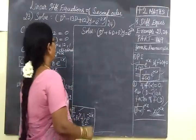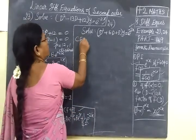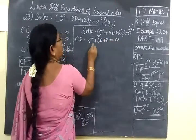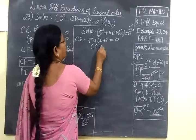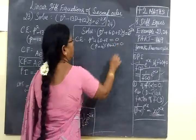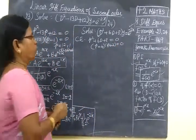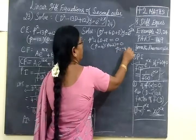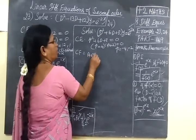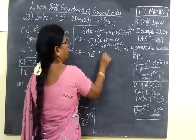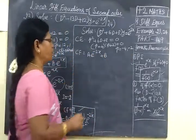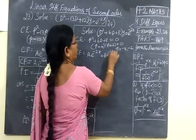Next we are finding example 24 the same way. First we find the characteristic equation. So p squared plus 6p plus 8 equal to 0, which implies p plus 4, then p plus 2 equal to 0. So p equals minus 4 and minus 2. Here also the complementary function is a e power m1 x plus b e power m2 x. We write the greater number first, then the smaller.